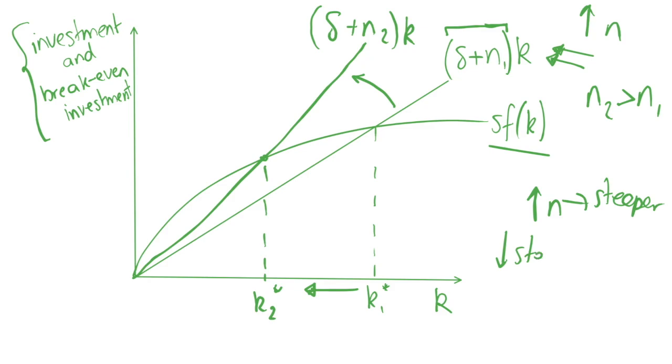We increase n, we get a steeper break-even investment curve, and this reduces the steady state k star, capital per capita. This will also reduce the steady state output per capita y star, since we have y star equals a function of capital per capita in the steady state. Solow thus predicts that higher population growth implies that we have lower capital and income per worker in the long run.